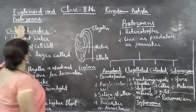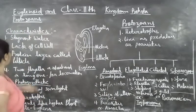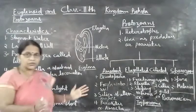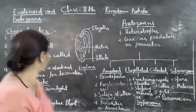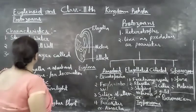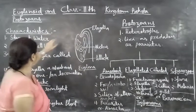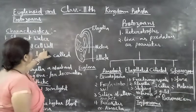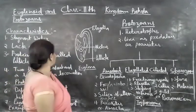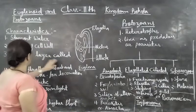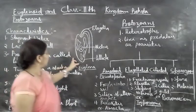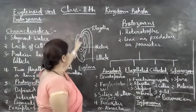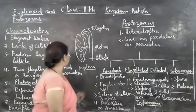I will teach you about the euglenoid and protozoans. The characteristic of euglenoid — what is an organism called euglenoid? As an organism, they live in aquatic water. Here, instead of a cell wall, a protein layer is present which is known as pellicle.